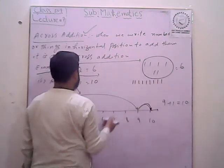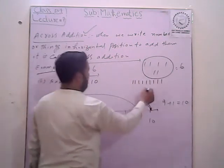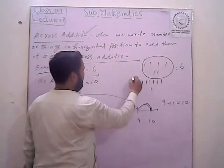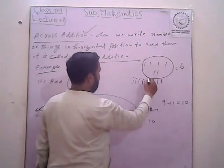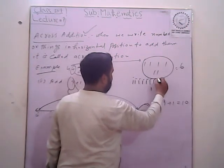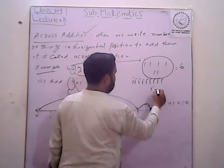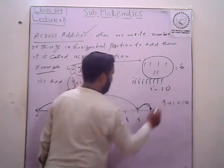Now the other number is 1, and we add these numbers: 1, 2, 3, 4, 5, 6, 7, 8, 9, and 10 — which is equal to 10.